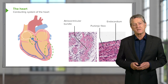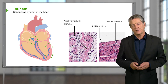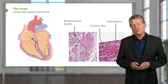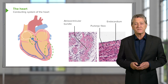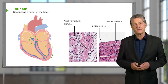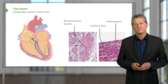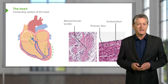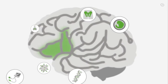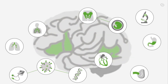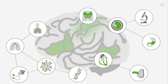Another way you can tell the difference between the Purkinje fibre and surrounding cardiac muscle fibres is that Purkinje fibres often have two nuclei. Remember, cardiac muscle only has one nucleus.